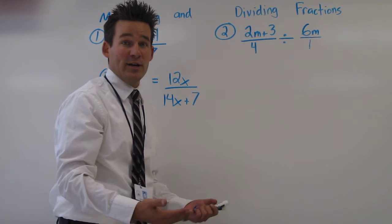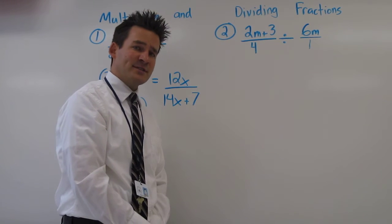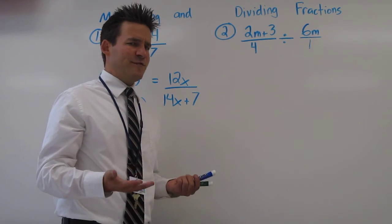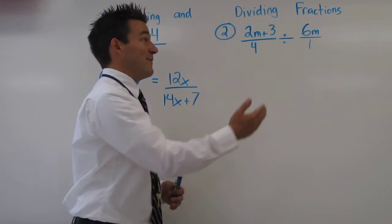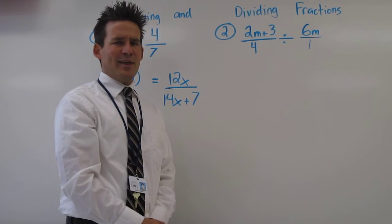So, 6m over 1 is going to become 1 over 6m. Once you find that reciprocal, you can simply find the product of the two fractions. So, let's do that.